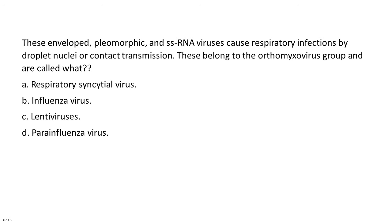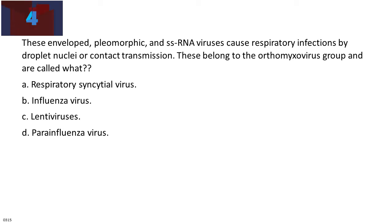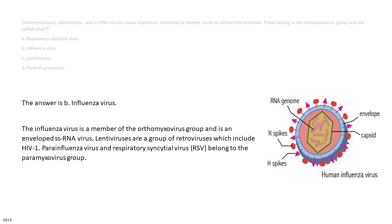These enveloped, pleomorphic, single-stranded RNA viruses cause respiratory infections by droplet nuclei or contact transmission. These belong to the orthomyxovirus group — called what? A. Respiratory syncytial virus. B. Influenza virus. C. Lentiviruses. D. Parainfluenza virus. The answer is B. Influenza virus. The influenza virus is a member of the orthomyxovirus group and is an enveloped ssRNA virus. Lentiviruses are a group of retroviruses which include HIV-1. Parainfluenza virus and respiratory syncytial virus (RSV) belong to the paramyxovirus group.